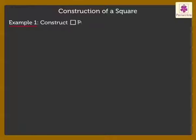Let's start with construction of a square. Construct square PQRS with side length 5.3 cm.